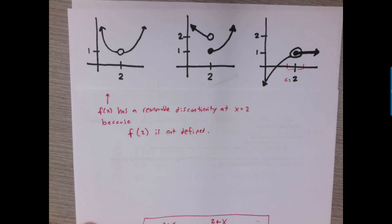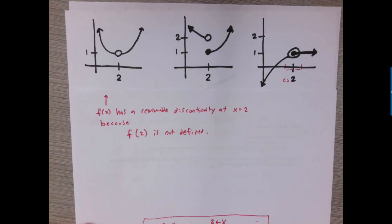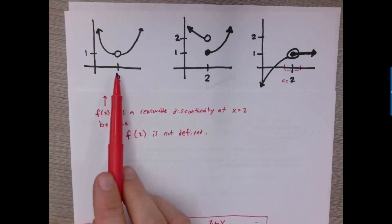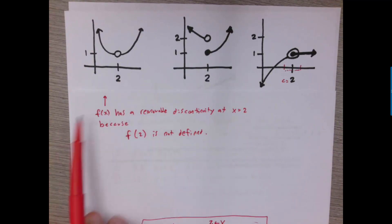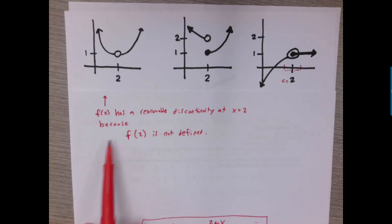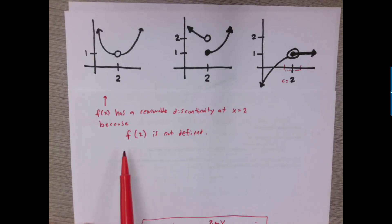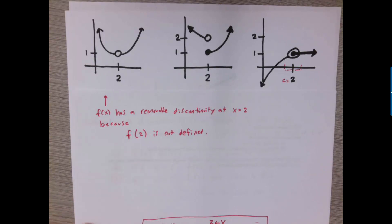This also gives us language for explaining why certain discontinuities are happening. In this graph, I would say f of x has a removable discontinuity at x equals 2. And if you were asked the reason, the reason is because f of 2 isn't defined — and that's one of the necessary conditions that's part of the definition of being continuous.